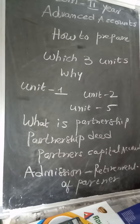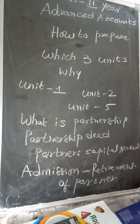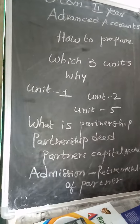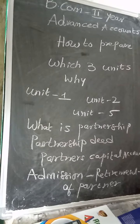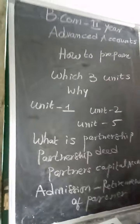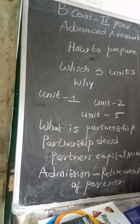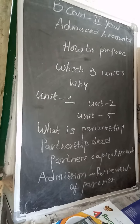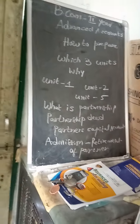Insolvency means if any partner has more debts than assets — that is, if a partner's liabilities exceed their assets — they are said to be an insolvent partner. Whatever amount is scarce in their capital account is to be borne by the remaining partners in their capital ratio. This is known as the Garner versus Murray case, which is an important topic.